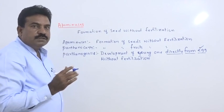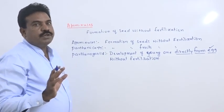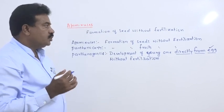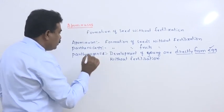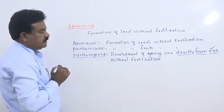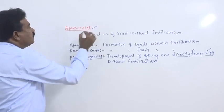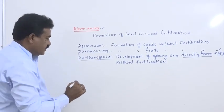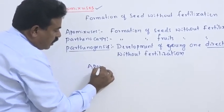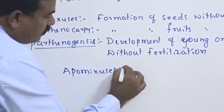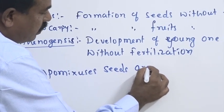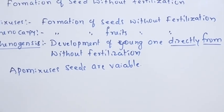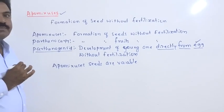But in natural process, during parthenogenesis, sperm is not involved. Sperm may not become directly young one. Egg develops into directly young one without fertilization that we call parthenogenesis. In this chapter, in detail, apomixis is given formation of seeds without fertilization. Then the apomixis seeds are viable means they have ability to germinate. Hence, they have greater agriculture importance.